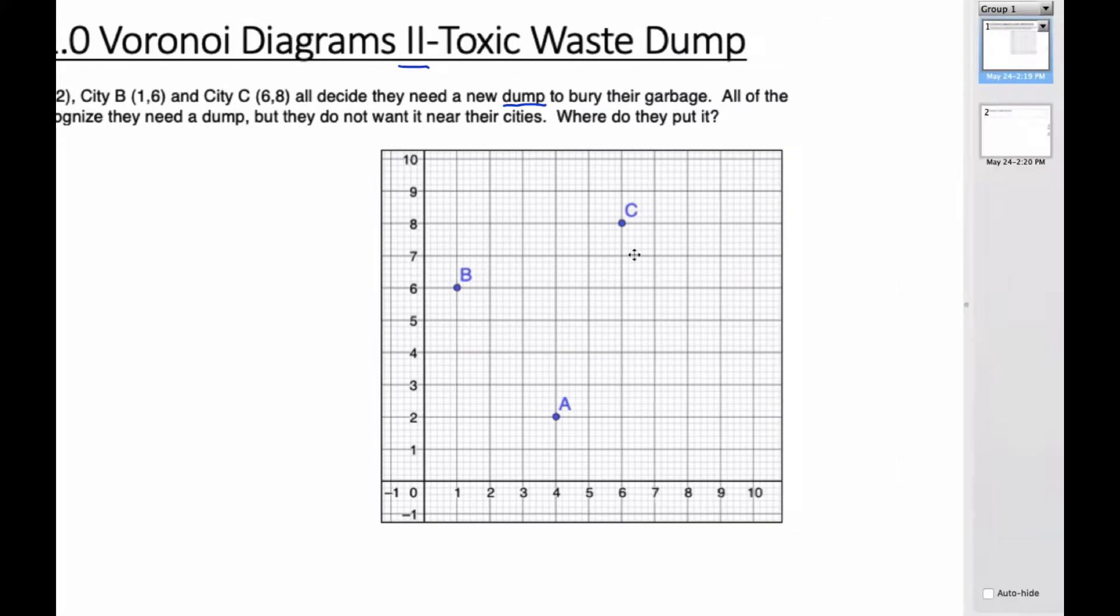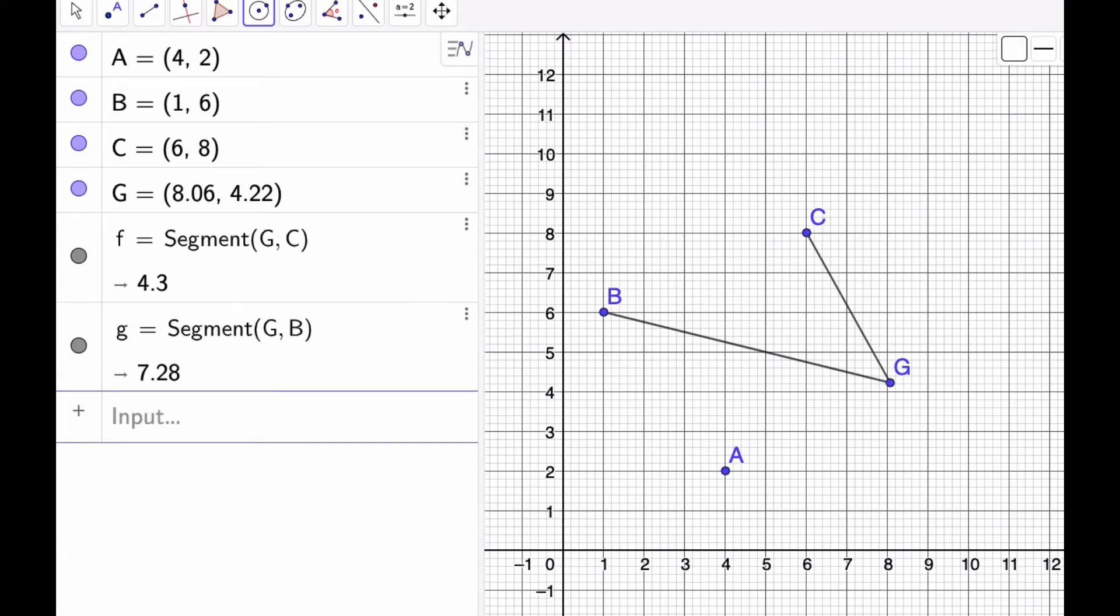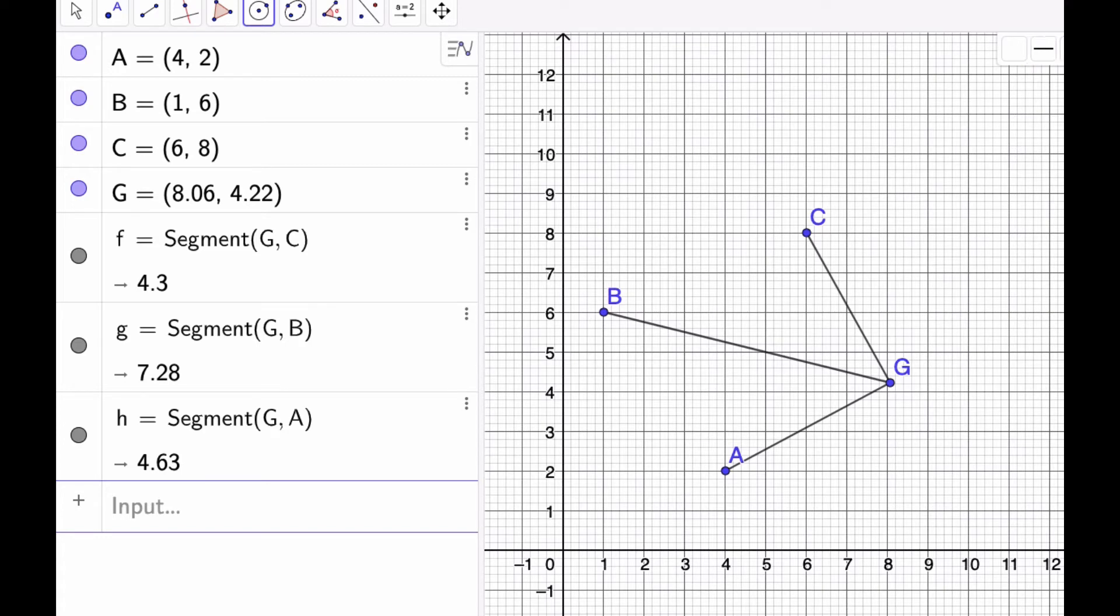Let's go ahead and see what's going to happen. So if I have my cities here and my garbage dump G, I'm going to make the distances. From G to C is 4.3, then it's 7.28, and then this segment is 4.63. I'm going to move G around so that it is as far away from the cities as they can, but still close enough that the driving is not so much.